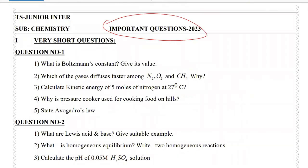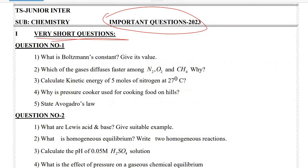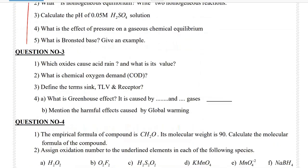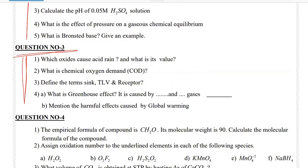Important questions — very short answers. Question number one key: E2. Next, question number two key: E1. Next, question number three: E4.